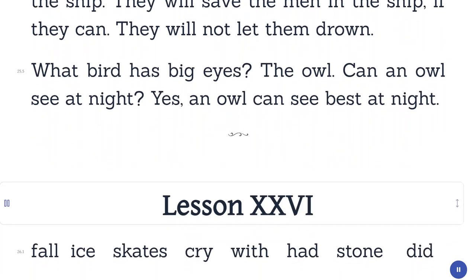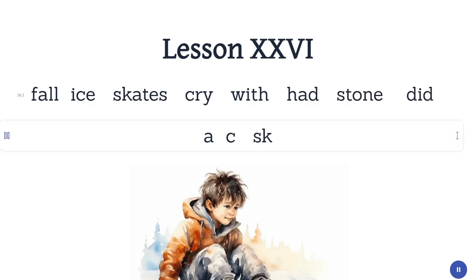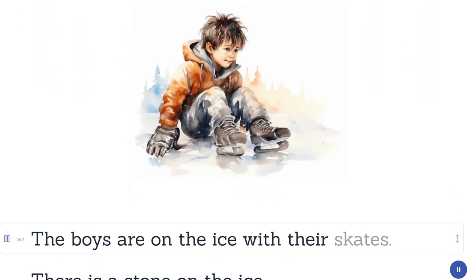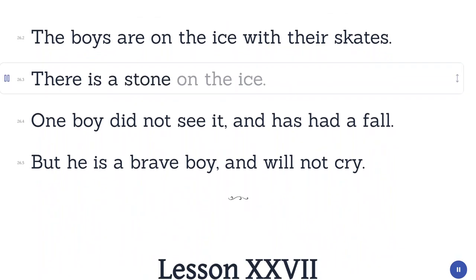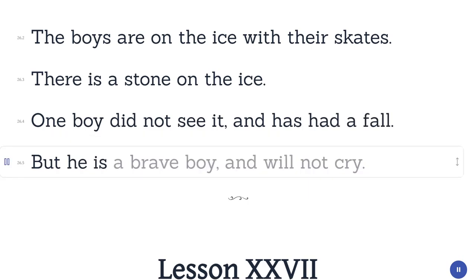Lesson 26. Fall. Ice. Skates. Cry. With. Had. Stone. Did. The boys are on the ice with their skates. There is a stone on the ice. One boy did not see it and has had a fall. But he is a brave boy and will not cry.